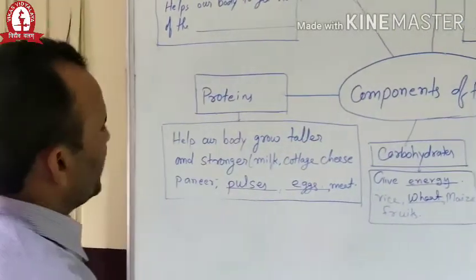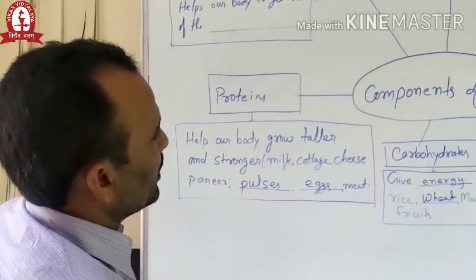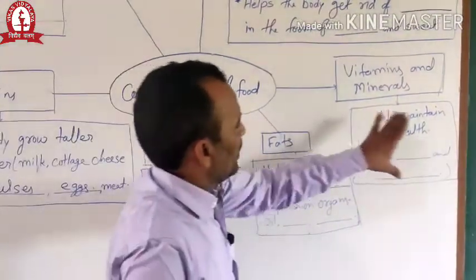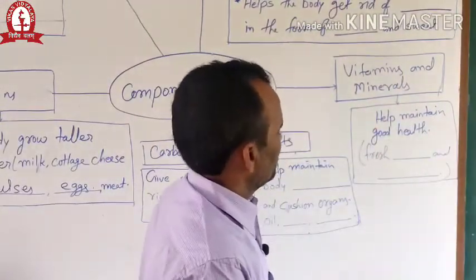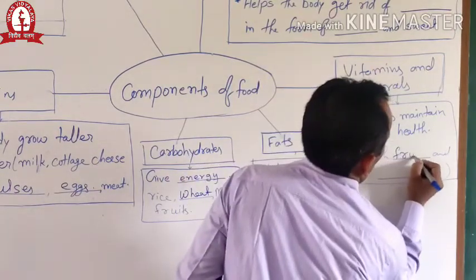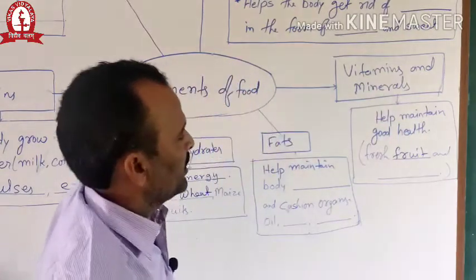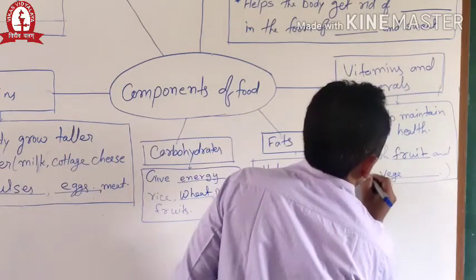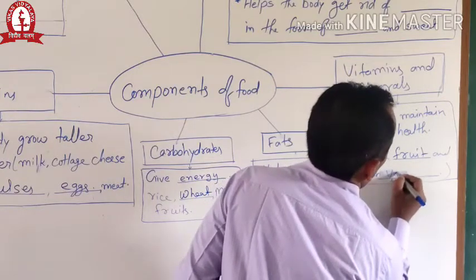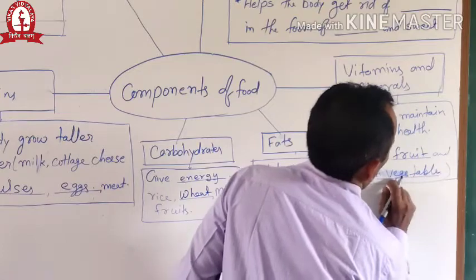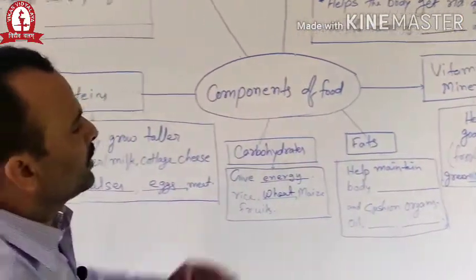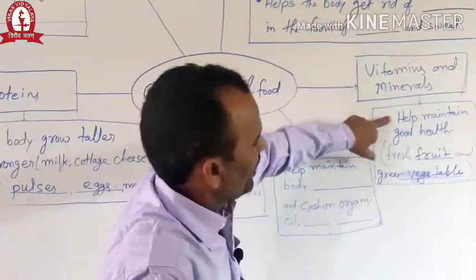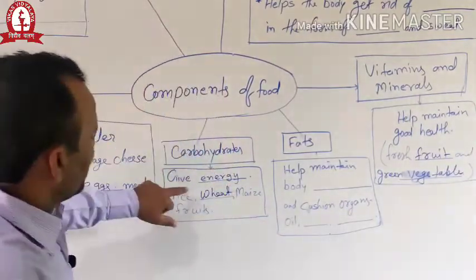After protein, the next important nutrient is vitamins and minerals. Vitamins and minerals help to maintain good health. Fresh fruits — meaning seasonal fruits — and green vegetables are the main source of vitamins and minerals. Once again: vitamins help to maintain our good health.